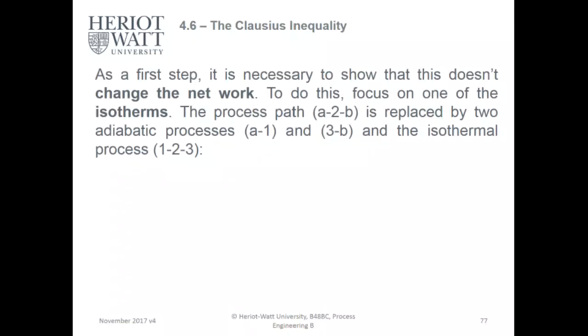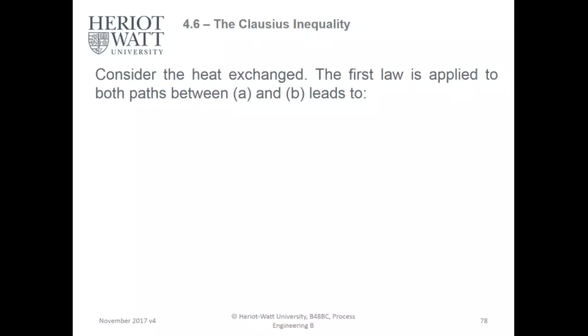As a first step, it's necessary to show that this doesn't change the network. To do this, focus on one of the isotherms, the process path, say A to B. A to B is replaced by two adiabatic processes, A to 1 and 3 to B, and then the isothermal process 1 to 3. This is just simulating the same work using a PV diagram.